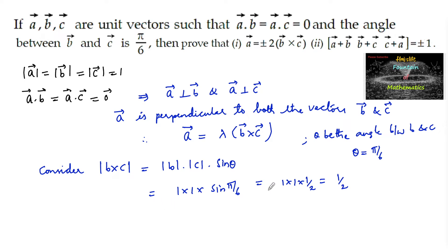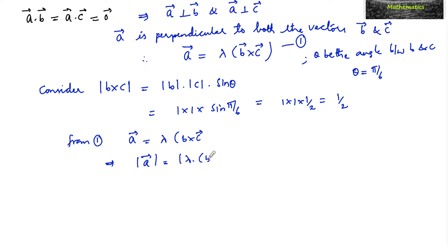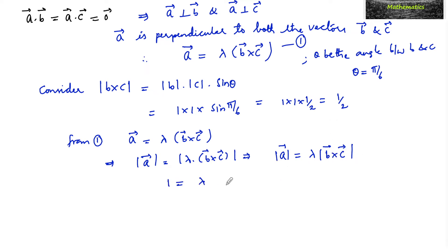So |b×c| = 1/2. From equation (1), a = λ(b×c). Applying modulus on both sides: |a| = |λ| · |b×c|. Since a is a unit vector, 1 = λ × (1/2).